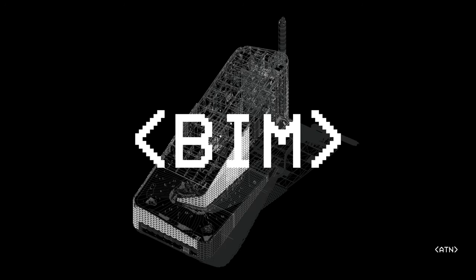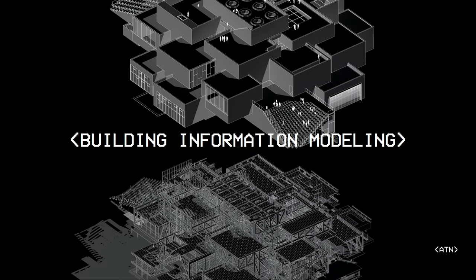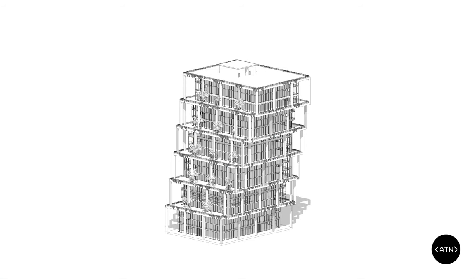First things first — let's define what BIM is, and I'm going to describe it in a couple of different ways. BIM stands for Building Information Modeling, but what does this actually mean? Well, BIM is really just a 3D model, and the moment it becomes a BIM model is when the geometry itself is not just a meaningless shape — it's packed full of data and information inside it.